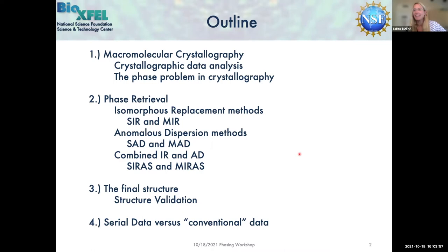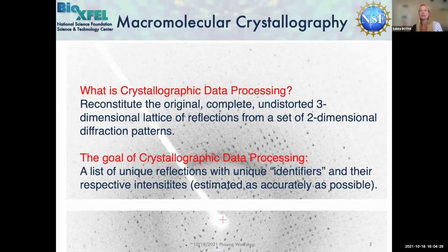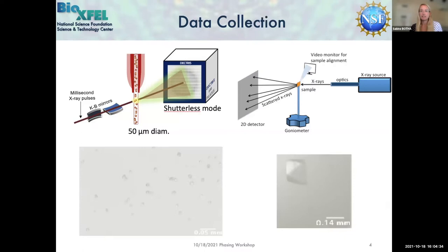What is crystallographic data processing? As you probably know, what you see in the background is a diffraction pattern from a protein crystal - these dark little spots. The whole point of crystallographic data processing is that we somehow need to get structural information out of these spots. We assign unique identifiers to them and then use them to calculate what our protein structure must have looked like.